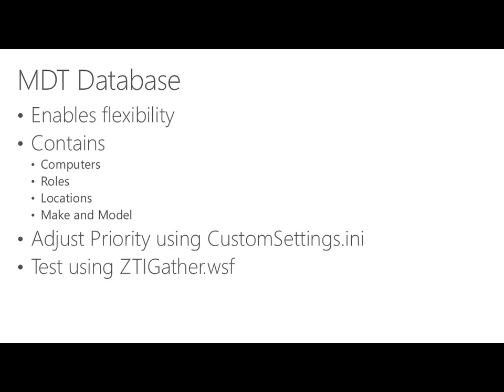How do we get access to it? It's a matter of editing the custom settings.ini and adjusting some of the priorities in there, which puts the priority above the hard-coded custom settings to look for something contained within the MDT database. We also have the ability to test what gets gathered and what's going to get applied using a file called ztigather.wsf. Once you've set up your MDT database and have some entries in there, use ztigather to see what results come back before you go to run the deployment.